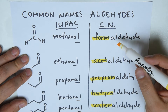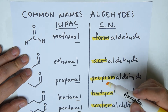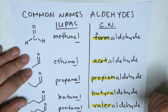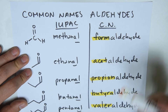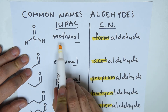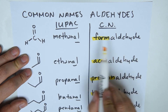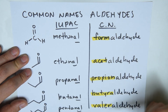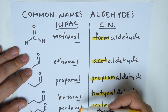So remember: number one is 'form' — formaldehyde. 'Acet' is number two — acetaldehyde. Three is 'propion' — propionaldehyde. 'Butyr' is number four — butyraldehyde. And 'valer' is number five — valeraldehyde. These are synonyms: in IUPAC we call it methanal, and in common names we call it formaldehyde. These two names represent the exact same molecule — just traditional names versus systematic international names.